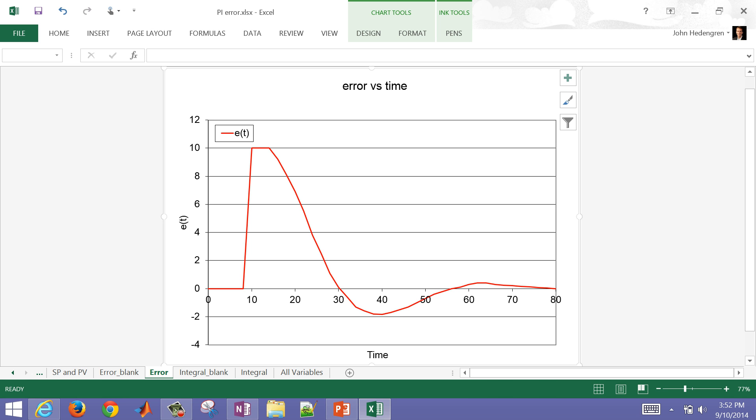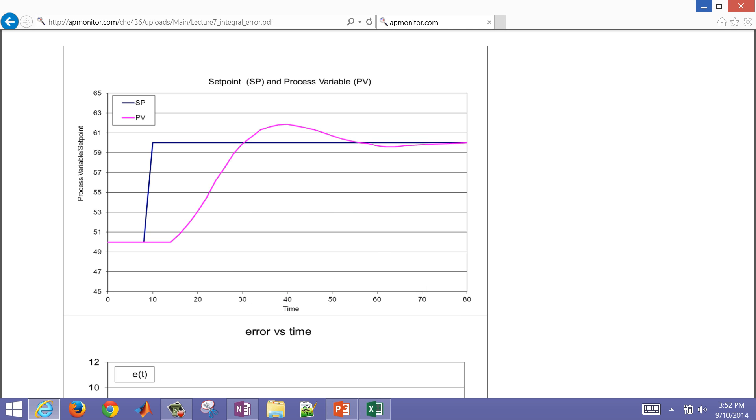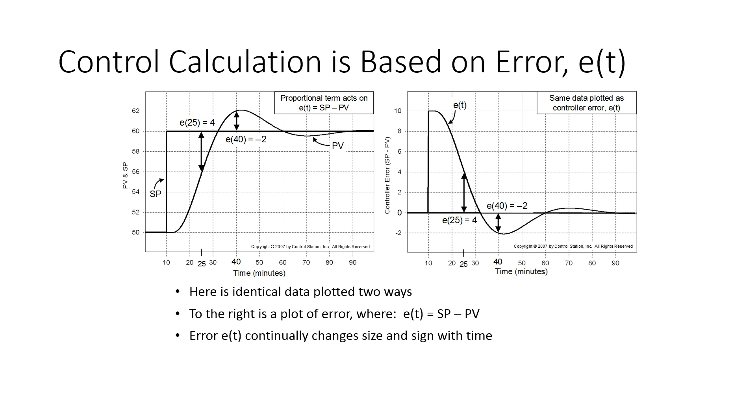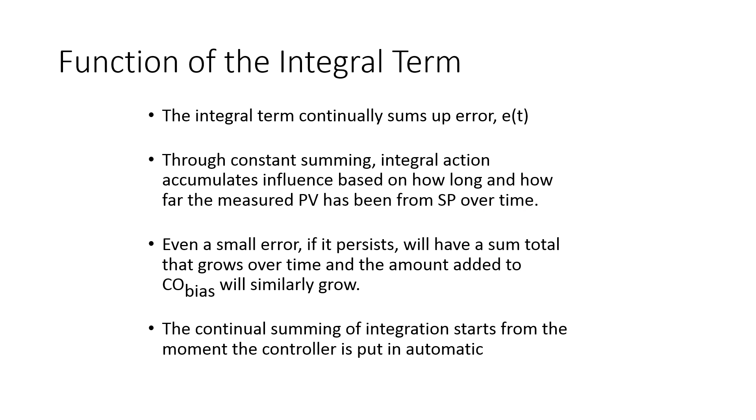You can see that the error goes up, stays at 10 until time equals 15, and then goes negative and then back positive again. These are the terms that we're looking at with our PID equation. We have this error as we showed in Excel, and it's going to change size and sign with time.